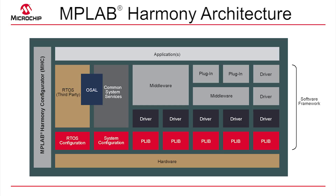The configuration piece is necessary to select which blocks you're going to use and define the buffer sizes and various other parameters that each library supports. That configuration is provided to you by the MPLAB Harmony Configurator, the MHC. That's our graphical tool that you'll get a demonstration of in our second webinar in this series, and it provides an easy way to create these configurations and put together systems.